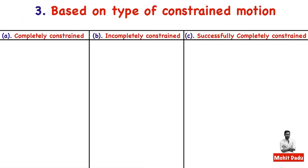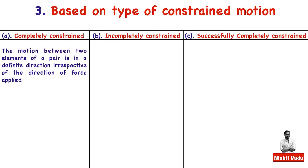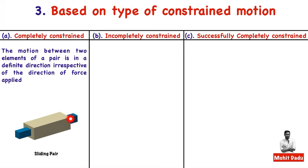The third classification is based on constrained motion — how controlled the relative motion is. The first type is completely constrained motion, where motion between the two elements happens only in a single direction, independent of the direction of load applied. A sliding pair with a rectangular bar in a rectangular slot is an example — the only possible motion is translation.